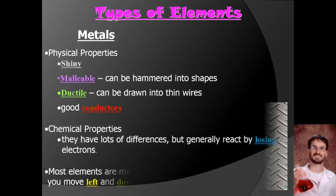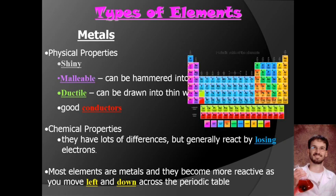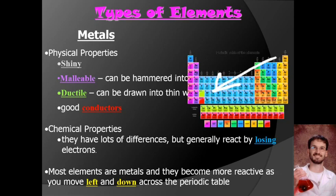Generally, metals react by losing electrons. One important pattern to remember: as you move left and down the table, metals become more and more reactive. That means francium, in the lower left, is the most reactive metal in the universe.